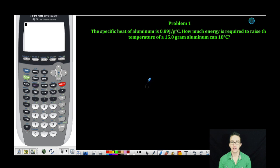As we take a look at problem number one, we are told the specific heat of aluminum is 0.89 joules per gram degree Celsius. We want to know how much energy is required to raise the temperature of a 15.0 gram aluminum can 18 degrees Celsius.